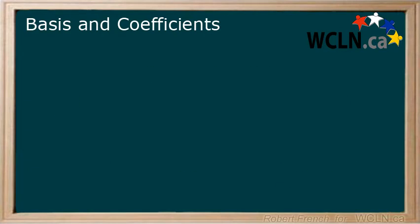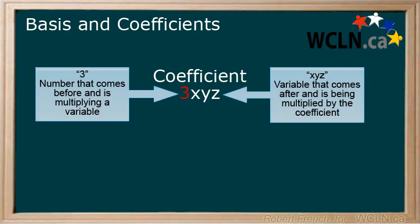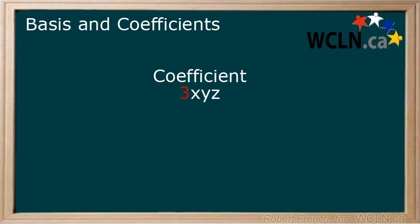A few of the examples we just looked at had a number followed by a variable. The word coefficient is used to describe this number. A coefficient is a number that comes before and is multiplying a variable. Here are a few examples.